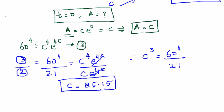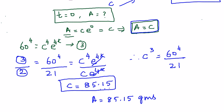In the exam, spending time on the logarithmic table will waste time, so you should remember that C = 85.15 for this problem. Practice many times at home with the log books. Since A = C at t = 0, the amount of substance present initially was 85.15 grams. That is the answer.